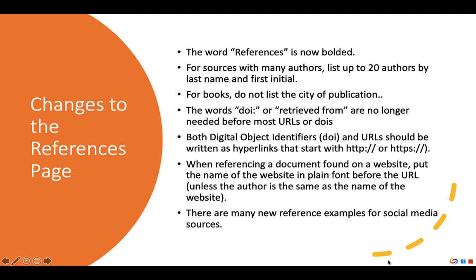There have also been important changes to how you reference online sources. First, you no longer need the words 'DOI' or 'retrieved from' before a web address. You can simply put the address or the DOI after the publication information. Also, URLs and DOIs should now always include https:// at the beginning, making them into proper web addresses. Further, when referencing a document from a website where the author is different from the name of the website, you now put the name of the website in plain font just before the URL. Finally, APA 7 has many new examples of how to cite social media sources such as tweets, podcasts, and Instagram posts. Check out the Academic Skills Documentation Guide online for full information about how to cite these sources.